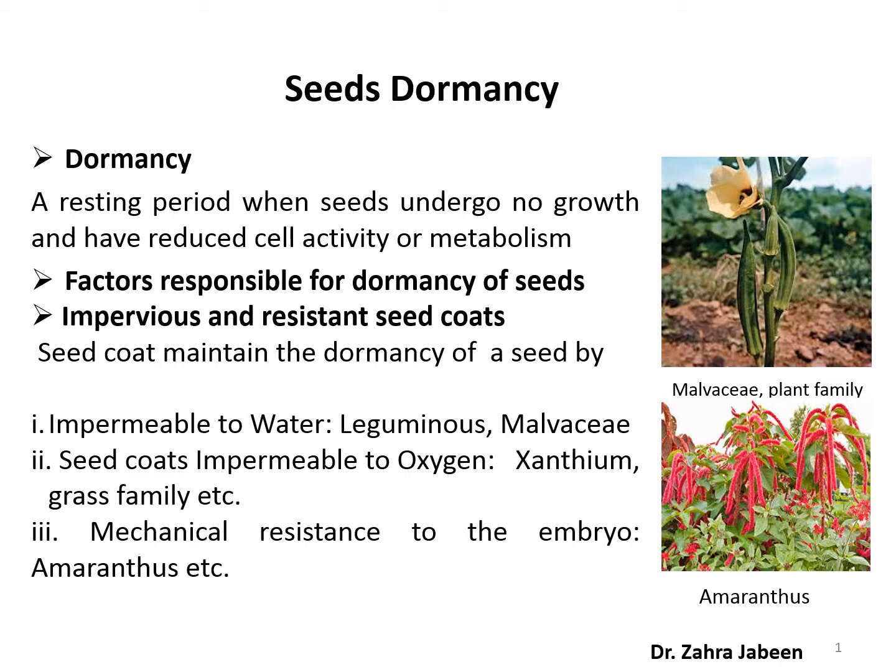The second factor is a seed coat impermeable to oxygen — for example, seeds of Xanthium and the grass family. The third factor is offering mechanical resistance to the embryo, thus preventing its growth — for example, seeds of Amaranthus.